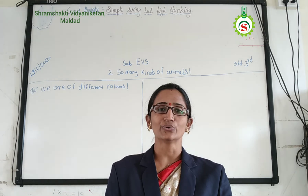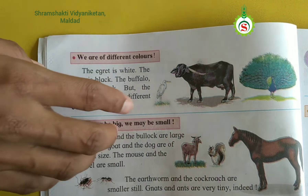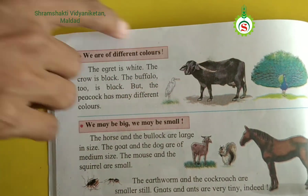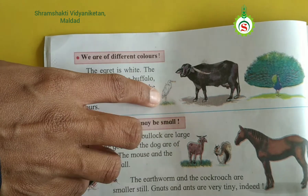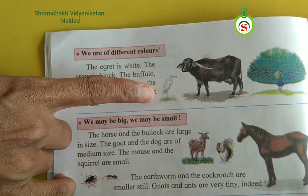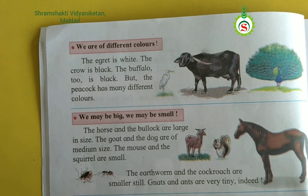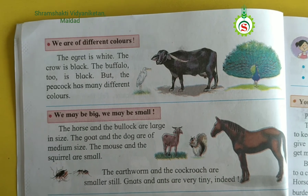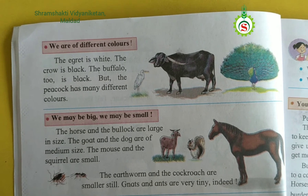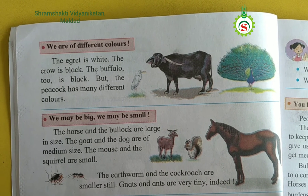I will show you one picture. Look at this picture. There are some birds and animals. Which bird is this? This is an egret. The egret is white in color. Some birds are white in color, like a swan, a crane. These birds are white in color.